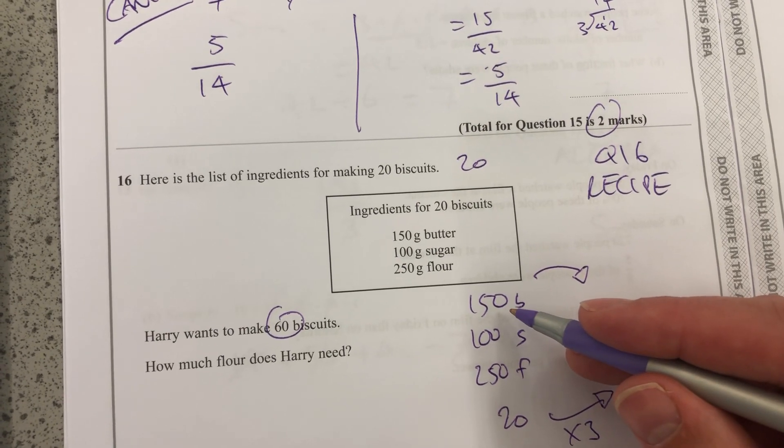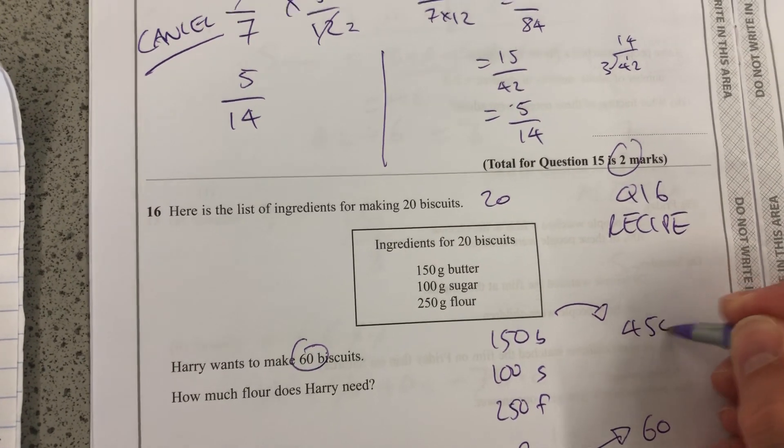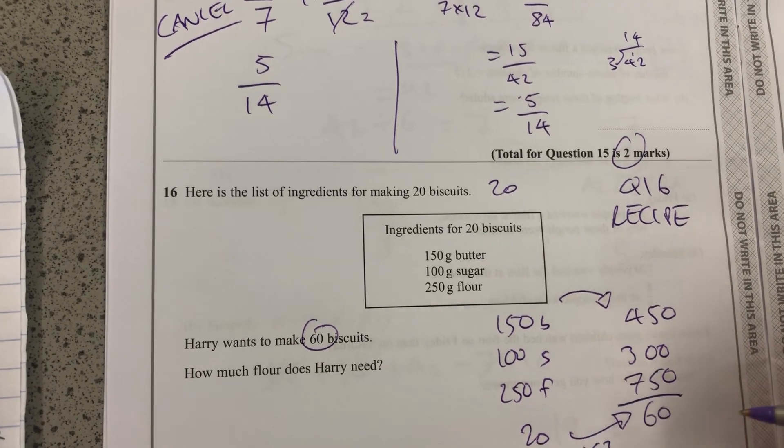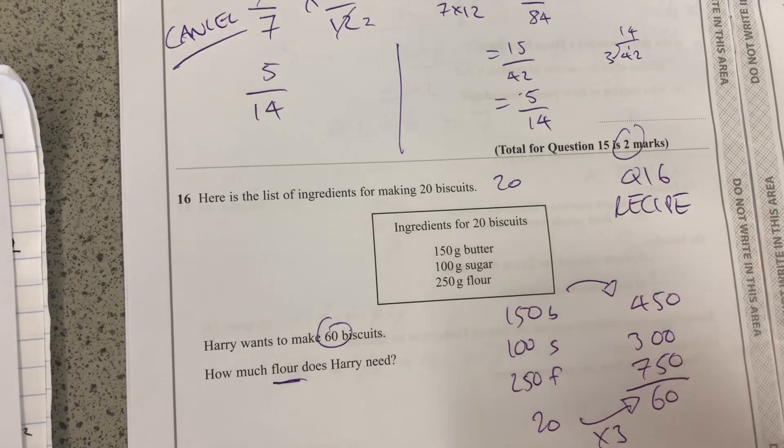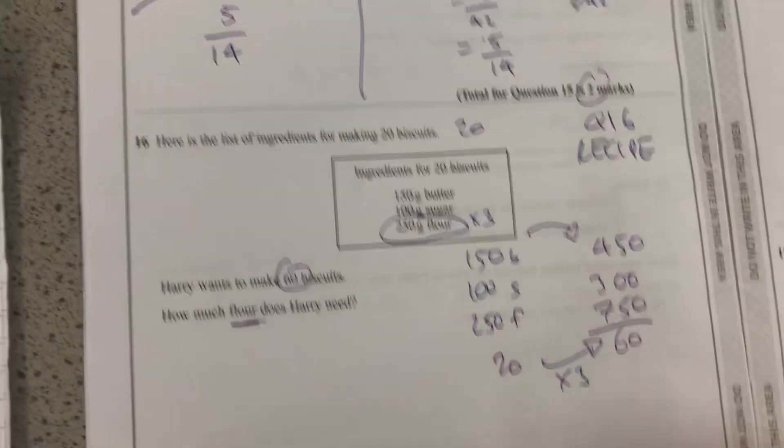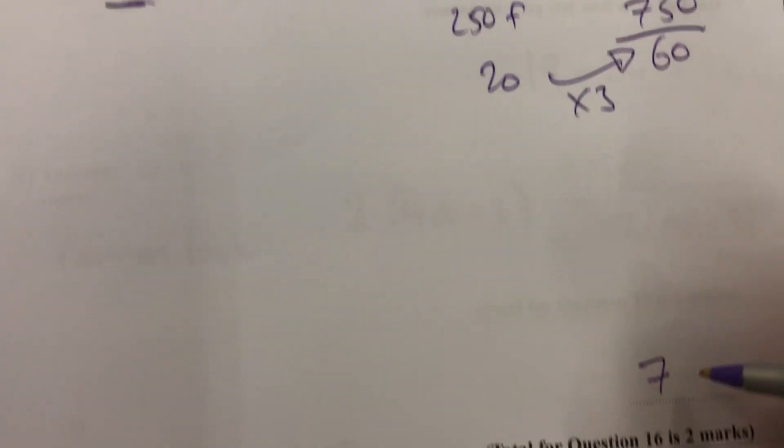150 times 3 is 450. That'll be 300. And that'll be 750. They've just asked how much flour, so just that one. I've got it times by 3, and I get 750.